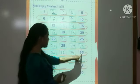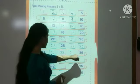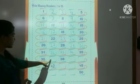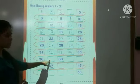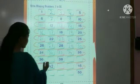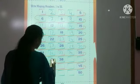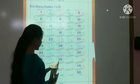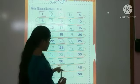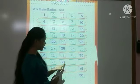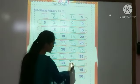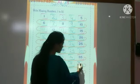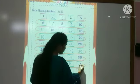Then 3 tens and 5 — 35. After 3 tens and 6, after 35 — 3 tens and 6 — 36. Then this box is empty — which number will come after 36? 3 tens and 7 — 37. Then 3 tens and 8 — 38. These boxes are empty. 3 tens and 9 — 39. And 3 tens and 9, 39. After 4 tens — 40.